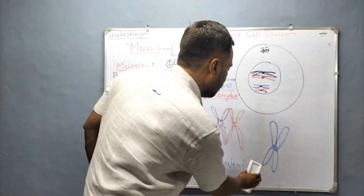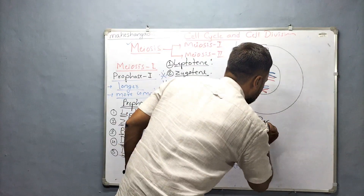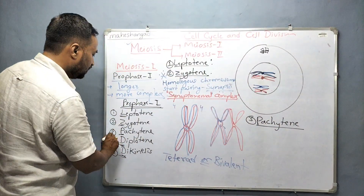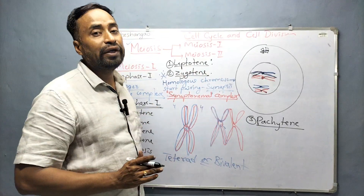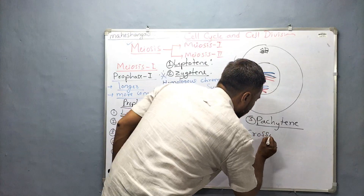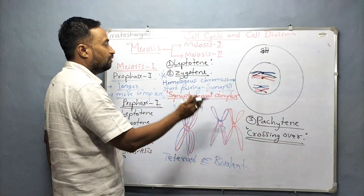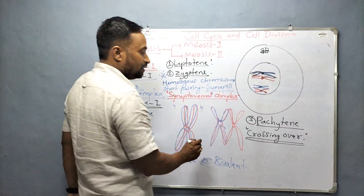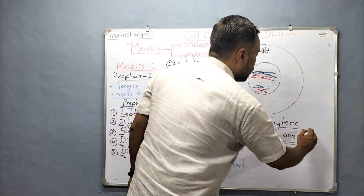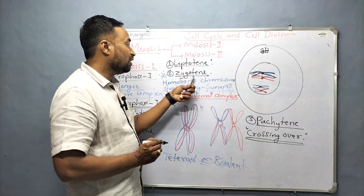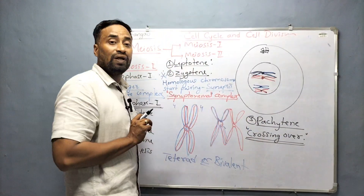Let's move on to the third sub-phase: pachytene. In pachytene, one more important change occurs — that is crossing over. Remember this point; it is a very important characteristic feature of meiosis, especially prophase one. Crossing over occurs at the pachytene stage. Compared to leptotene and zygotene, pachytene is a much longer phase, during which crossing over happens.